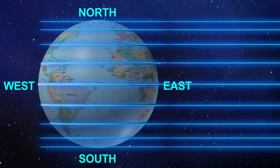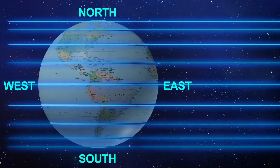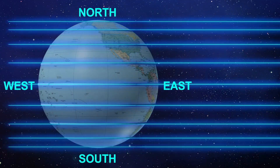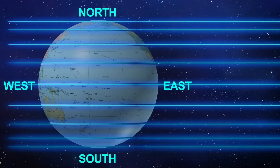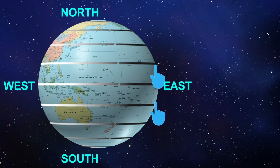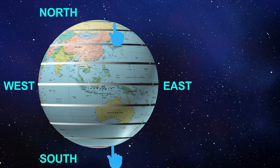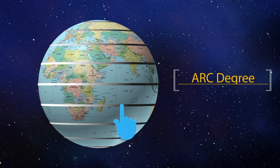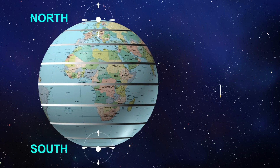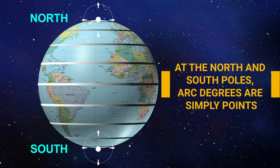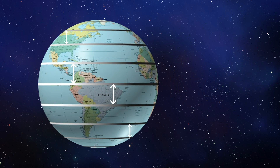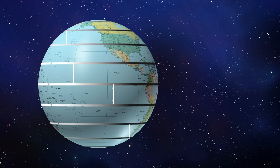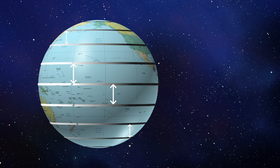Latitudes are the invisible horizontal lines that run around the earth from east to west, also known as parallels because they run parallel to one another and never meet. Lines of latitude decrease in length as they get toward the poles. One degree of latitude is called an arc degree. At the north and south poles, arc degrees are simply points. Since latitudes are parallels, the distance between each degree remains the same.